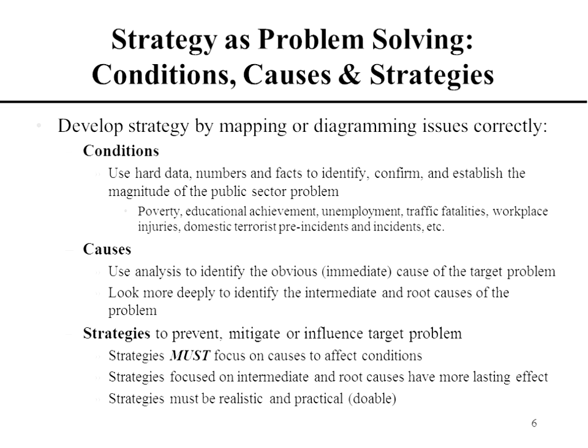The first thing always starts with conditions. Very often students say the problem is that the leadership is bad — but that's jumping to the end. We always have to start our analysis with conditions. The situational assessment should start with facts — hard data, numbers, and facts to identify and establish the magnitude of the problem. In the private sector: sales are declining, sales among 18-to-35-year-olds are declining, sales are increasing internationally but decreasing domestically. In the public sector, it might be poverty levels, educational achievement, unemployment, traffic fatalities, workplace injuries, domestic terrorism pre-incidents and incidents.